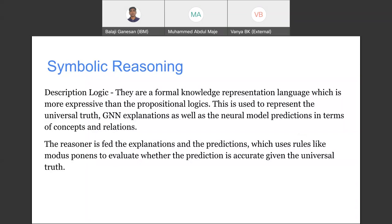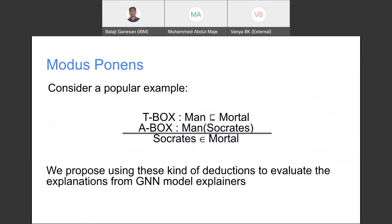So coming to modus ponens, what is modus ponens? So I'm sure many of you are familiar with the example that if there's an assertion that Socrates is a man, and we know the universal truth that every man is a model, then we can deduct that Socrates is a model. So we propose using these kinds of deduction to evaluate if the explanations from the GNN model explainers are accurate or not correct.